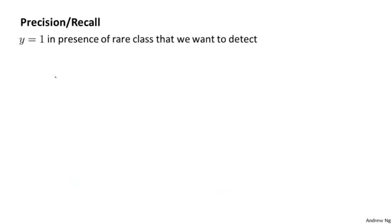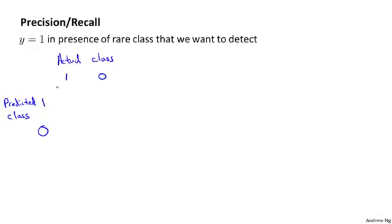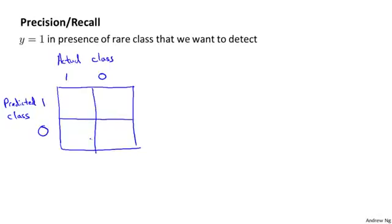Let's say we're evaluating a classifier on a test set. For each example in the test set, the actual class will be either 1 or 0, since this is a binary classification problem, and our learning algorithm will predict some value — also either 1 or 0. We draw a 2x2 table based on actual class versus predicted class. If the actual class is 1 and predicted class is 1, that's a true positive. If we predicted 0 and the actual class is also 0, that's a true negative.